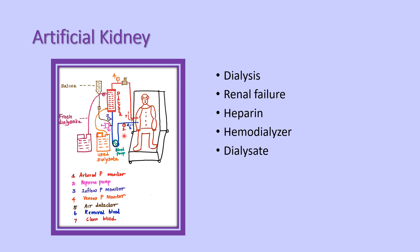These components enable easy flow of the blood from the patient to the artificial kidney and back to the patient through an AV fistula or catheter. Complications of the artificial kidney mainly include sleep disorder, anxiety, and depression.